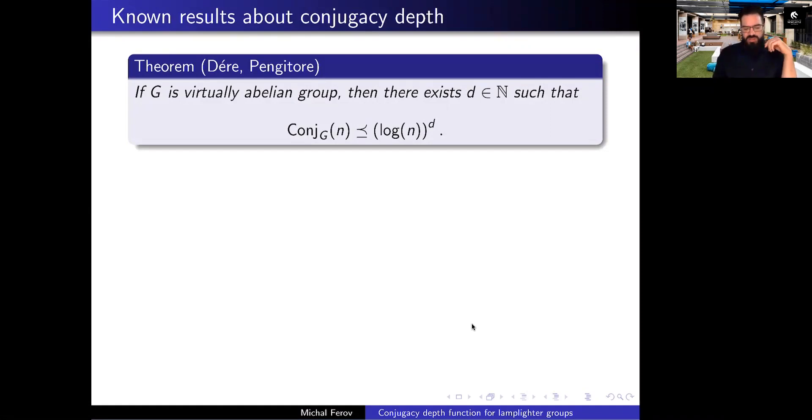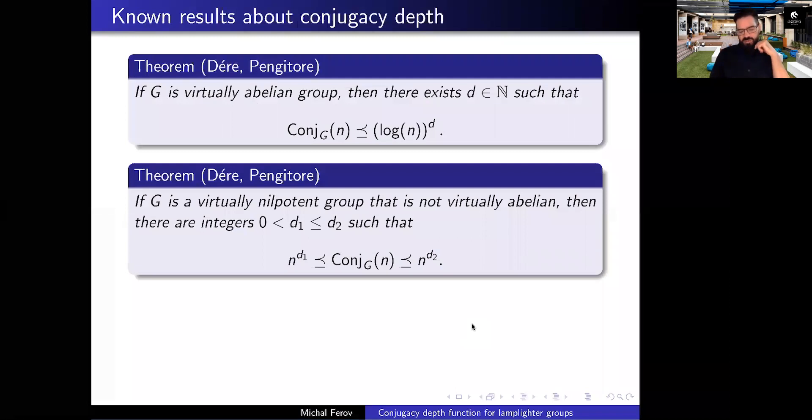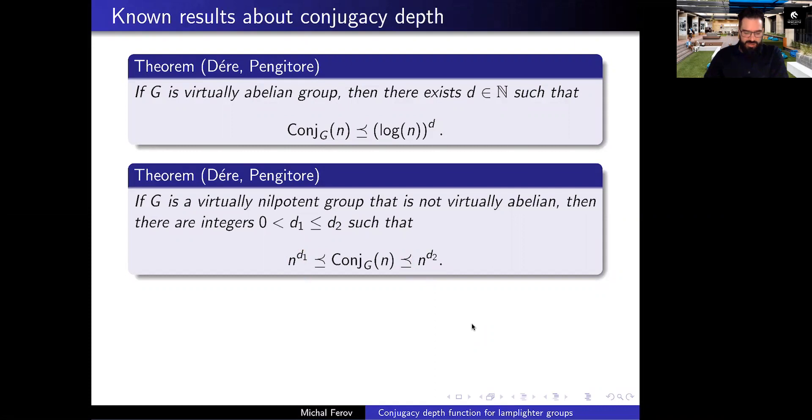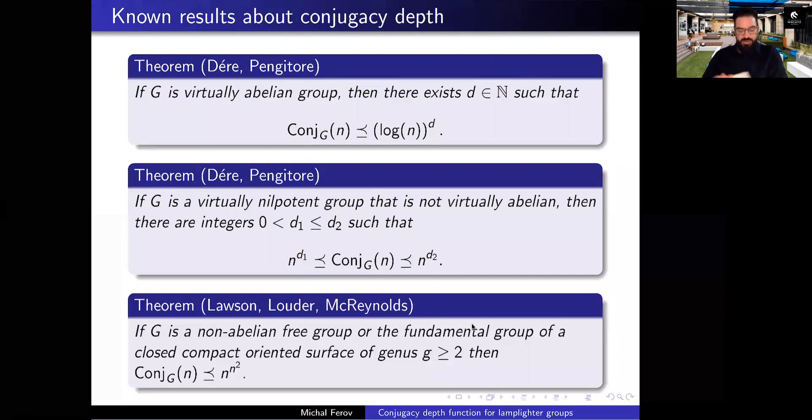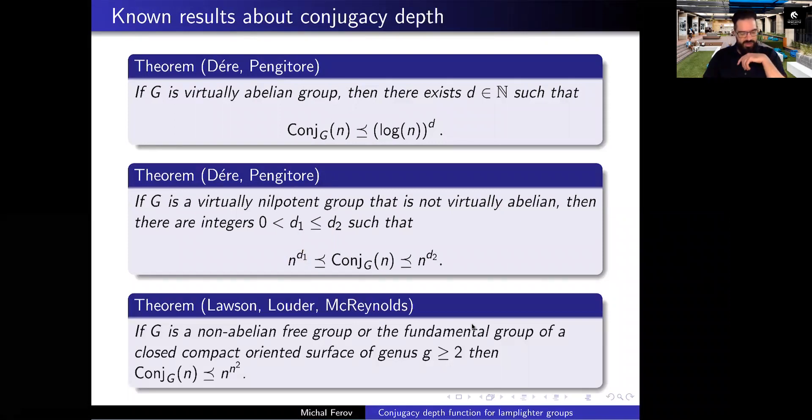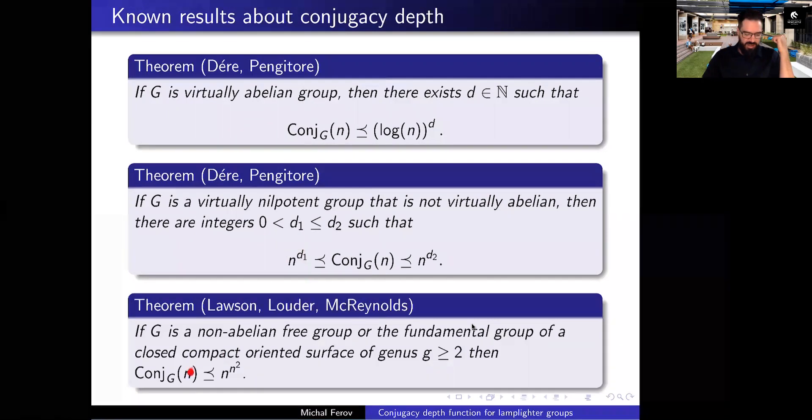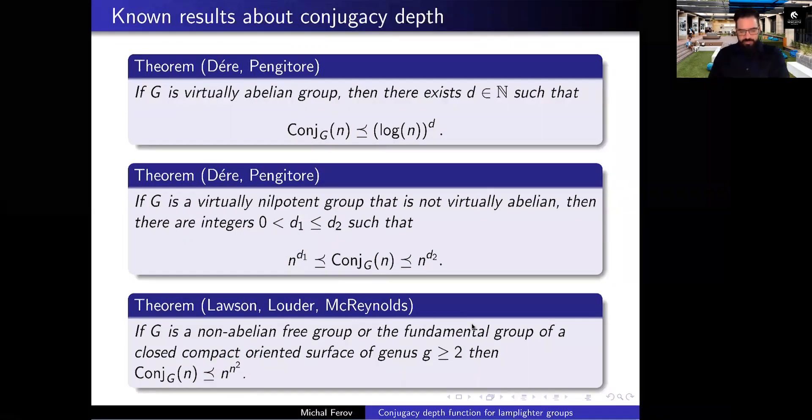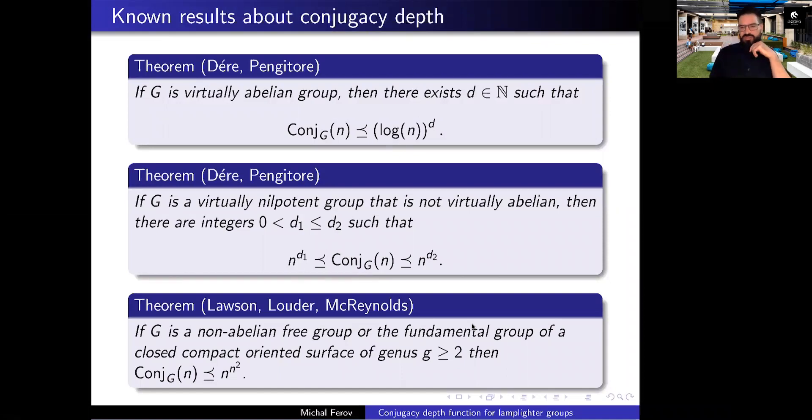So how much is known about these conjugacy depth functions? Not much. There's an upper bound for virtually abelian groups. Then also in case of virtually nilpotent groups, it is known that it is bounded below and above by polynomial. And in case of non-abelian free groups and fundamental groups of closed compact oriented surfaces of higher genus, it is bound from above by n to the n squared, which already seems like a pretty horrible function or pretty fast growing.